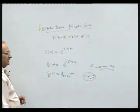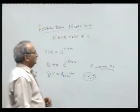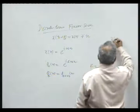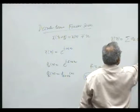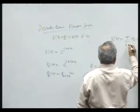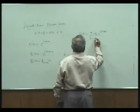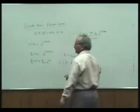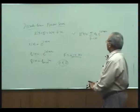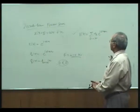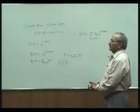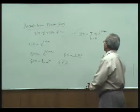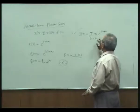Then we can represent any discrete time periodic signal as x[n] = summation over k of a_k e^(jkω₀n), where the summation is over one period. This is the discrete time Fourier series. That means we can represent a class of discrete time periodic signals in the form of this series, provided we know a_k.